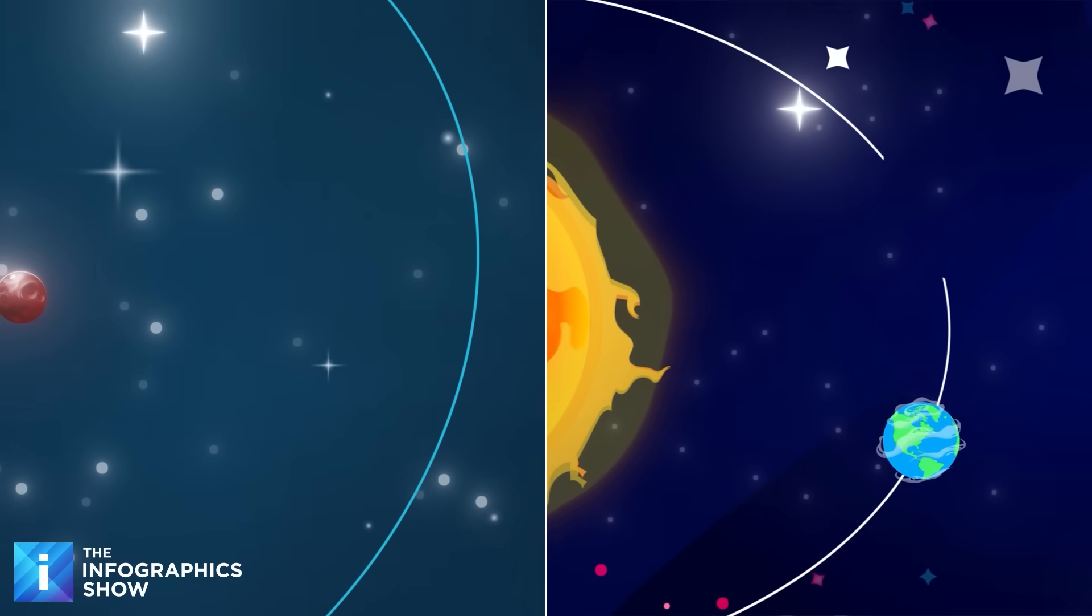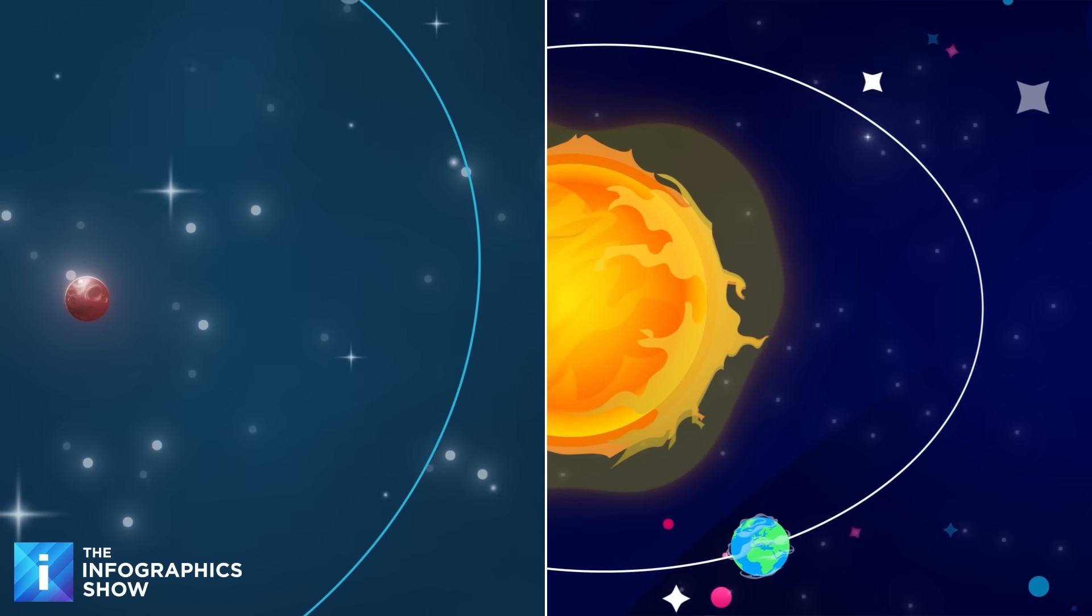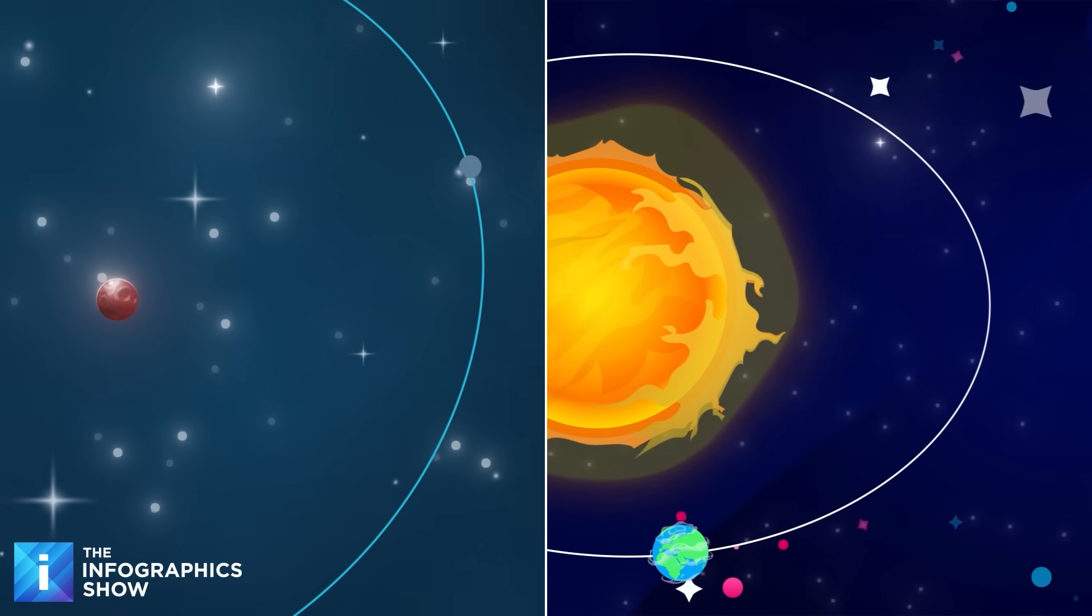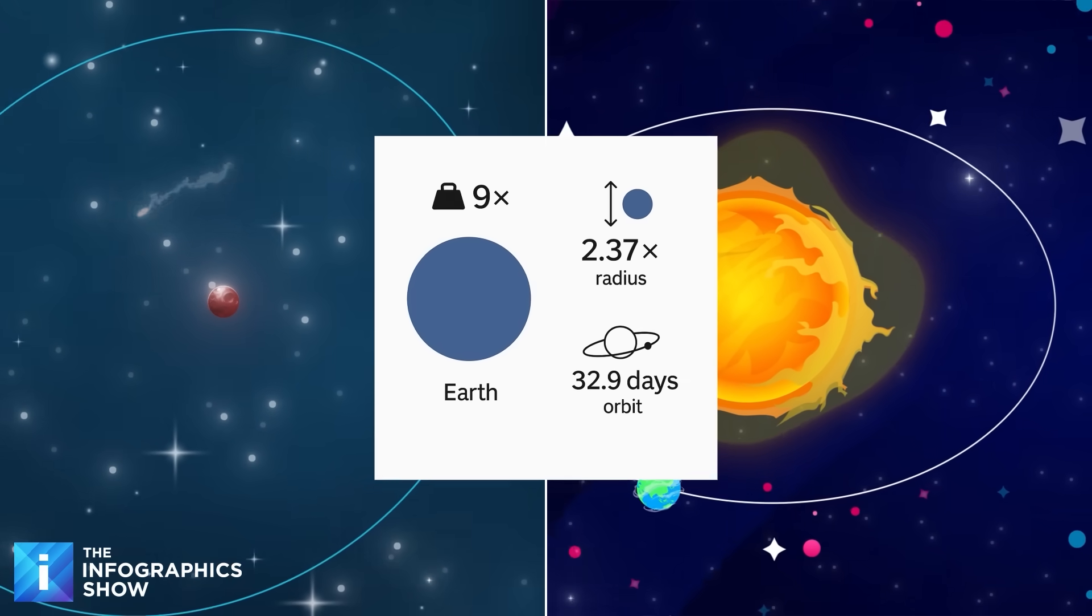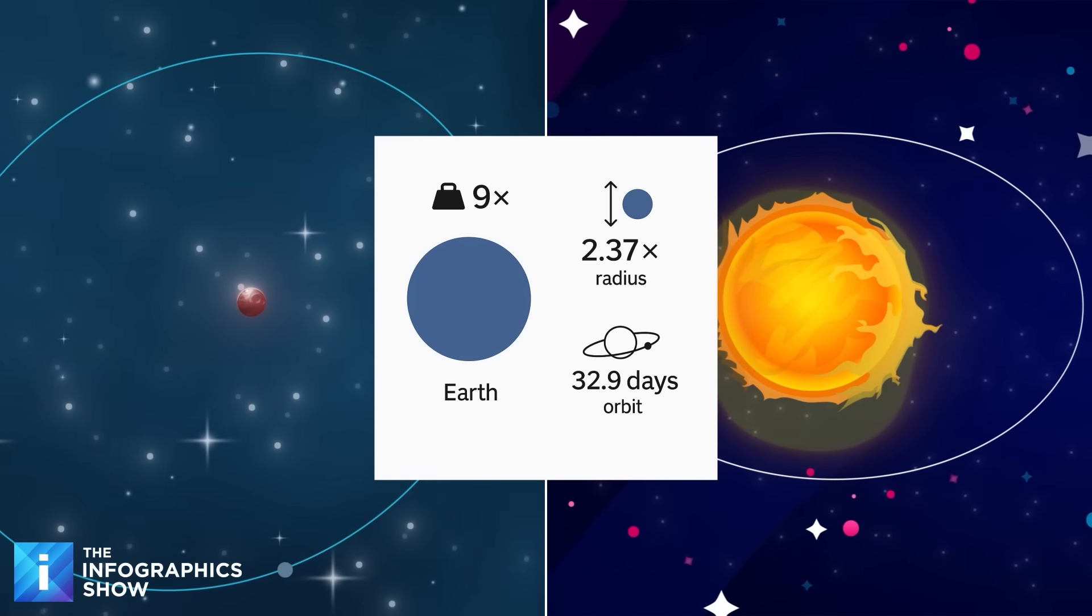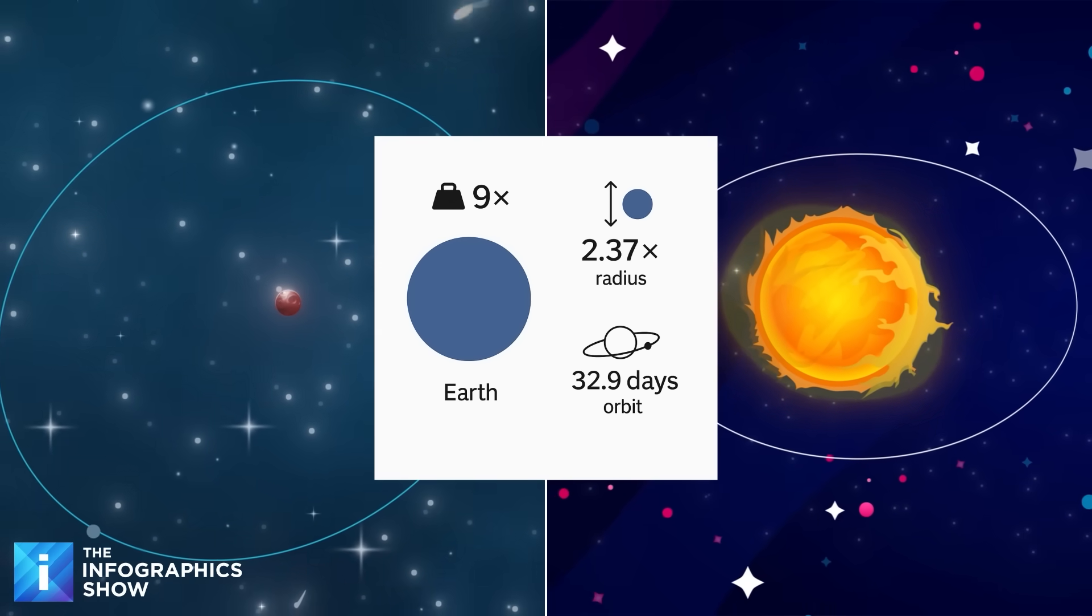K2-18b is a transiting exoplanet, which are planets that orbit stars outside of our solar system and between the Earth and its sun, increasing its observability from the Earth. K2-18b has a mass radius 9 times that of Earth, and it has a radius 2.37 times that of Earth. It has an orbital period of 32.9 days.